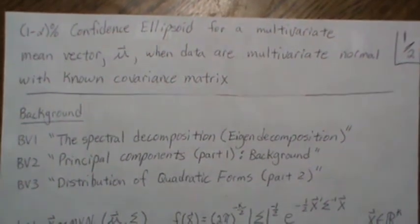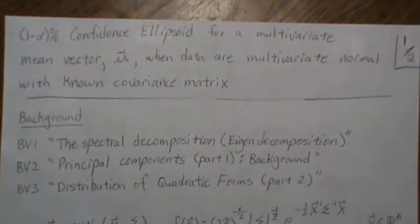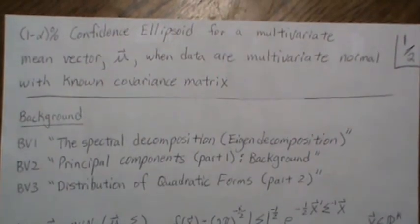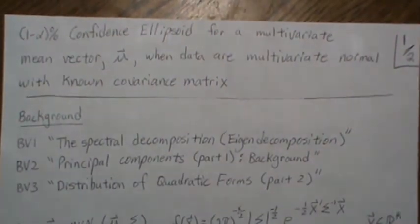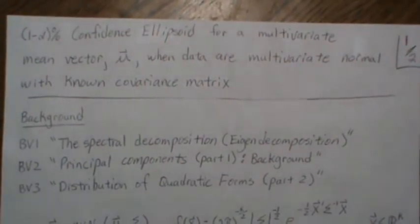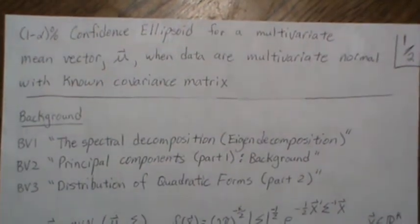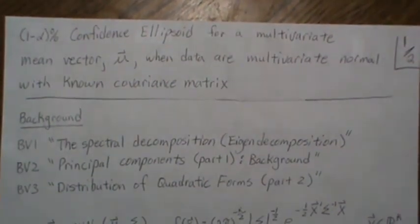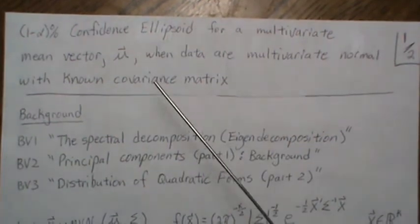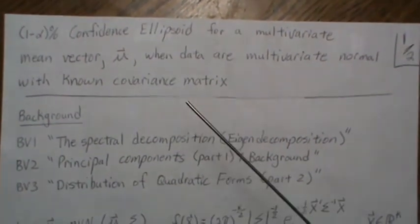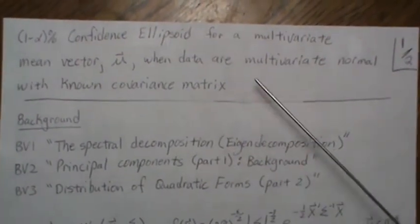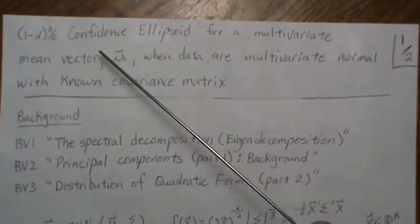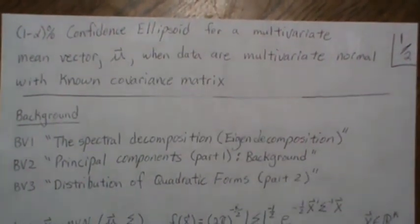In this video we're going to develop a confidence ellipsoid for a multivariate mean vector, assuming the data are normal with a known covariance matrix. In the univariate setting the ellipsoid would be an interval, but since we're in multivariate mode the confidence interval becomes an ellipsoid.